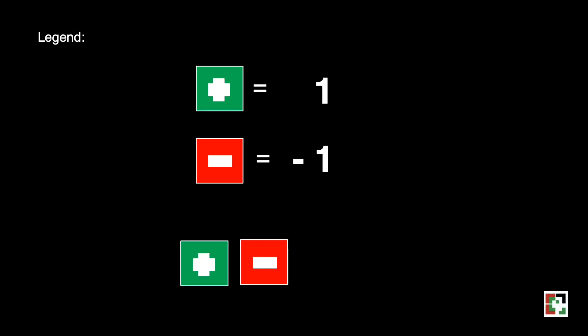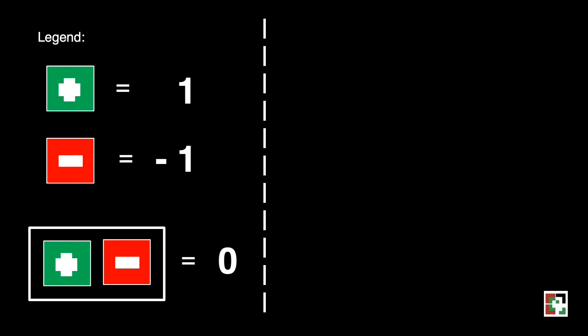Let's take note of the following. One green square is equal to one or positive one and one red square is equal to negative one. And a pair of green and red square is equal to zero and it is called a zero pair.